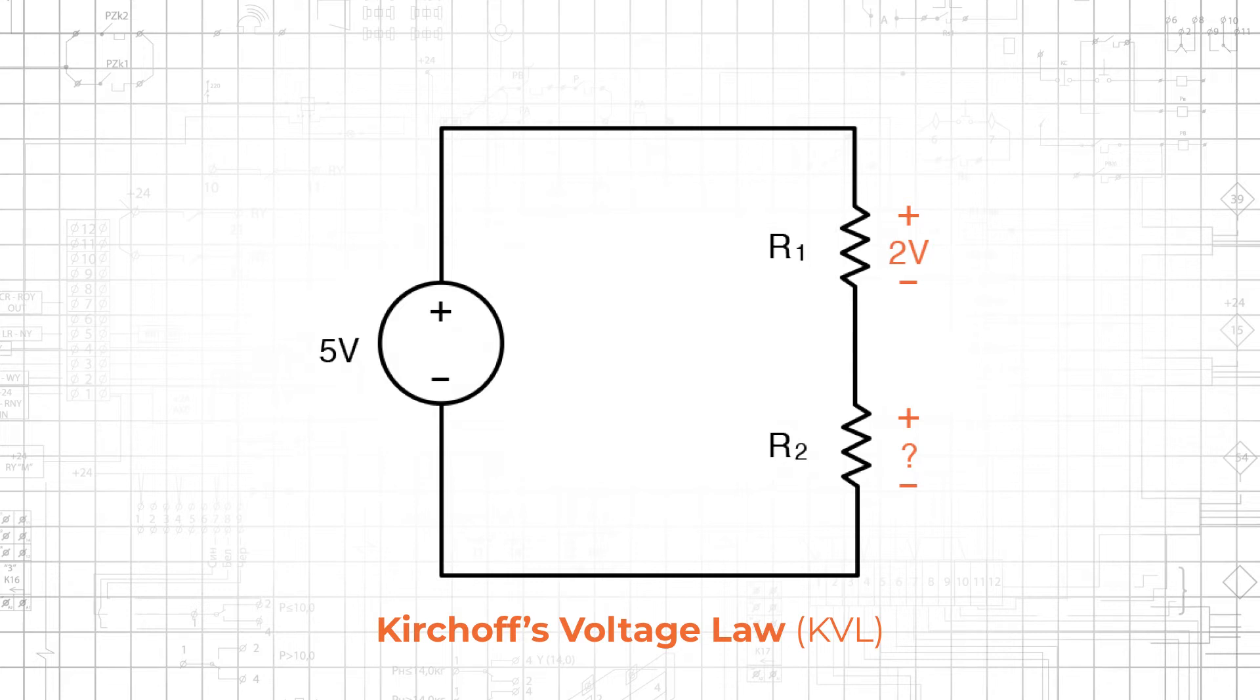In this example, since we know VR1 equals 2 volts and V supply equals 5 volts, we know from KVL that VR2 equals 3 volts.